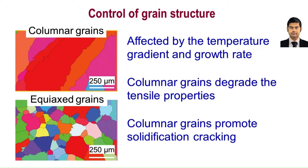Grain structure affects the properties and serviceability of additively manufactured metallic parts. Solidification morphology and grain size are the two most important attributes of grain structure. Long columnar grains degrade the tensile properties and also can promote solidification cracking. Grain structure is significantly affected by the temperature gradient during solidification and solidification growth rate, and both these parameters can be calculated using a heat transfer and fluid flow model.